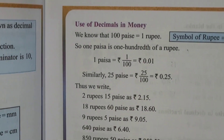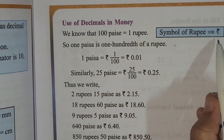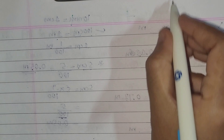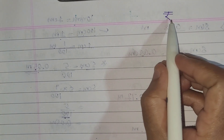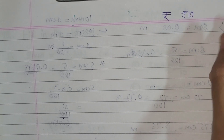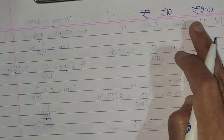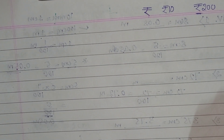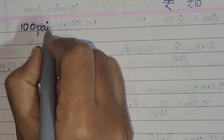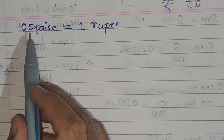Today we are going to learn one more concept of this lesson, that is the use of decimals in money. You know how we indicate money by using the rupee sign. We use this symbol for rupees. For example, 10 rupees, 20 rupees, 200 rupees — this is how you are going to write using the symbol for money. As we know, 100 paisa is equal to 1 rupee.